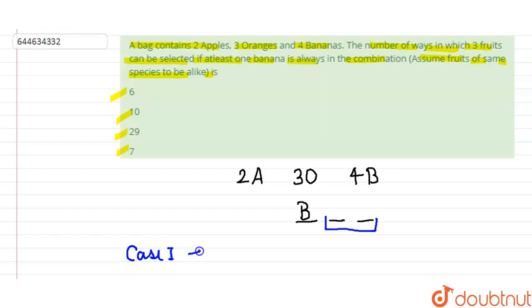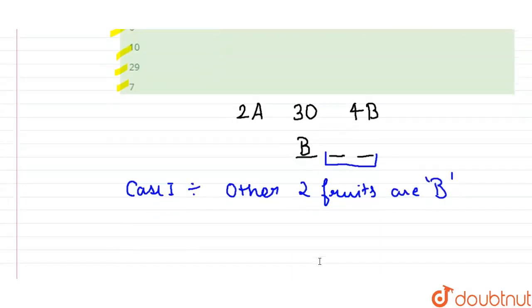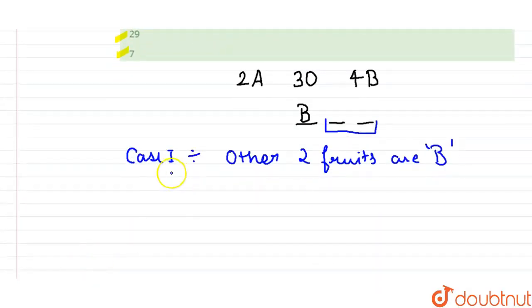Case 1: When other two fruits are also bananas. I'm writing B for banana. So now, number of ways of this case is 1.